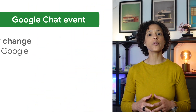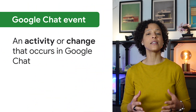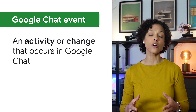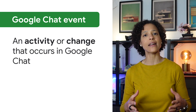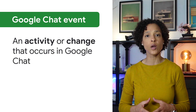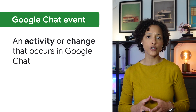A Google Chat event represents an activity or change that occurs in Google Chat. Examples would be when a user is added to a space or posts a message. Using the Google Workspace Events API, you can create subscriptions that notify your app whenever something relevant changes in Google Chat. Your app can then process or respond in a meaningful way for your users.